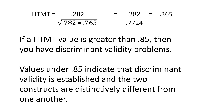With the heterotrait-monotrait approach, you look at all construct pairs. Since we have three constructs, I would assess HTMT between adaptive behavior and word of mouth, between adaptive behavior and customer delight, and between customer delight and word of mouth — looking across all those pairs to see the heterotrait-monotrait ratio of correlations.